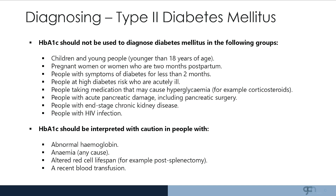HbA1c can be used but interpreted with great caution in patients with abnormal haemoglobin, anaemia, or altered red cell lifespans due to splenectomy, or in patients with a recent blood transfusion, as these things will interfere with the HbA1c.